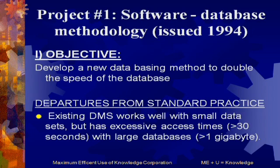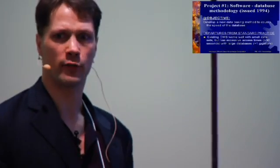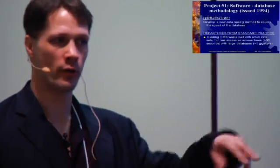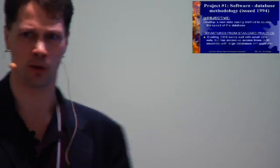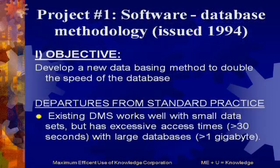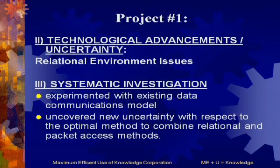We apply the square-triangle-circle framework. What we're told is the company has an existing database management system that works well with small data sets but has excessive access time — quantified as greater than 30 seconds — on large data sets, quantified as greater than one gigabyte. A lot of software people laugh at this now; they say clients won't wait more than three seconds. But the goal here is to improve the database method to double the speed.